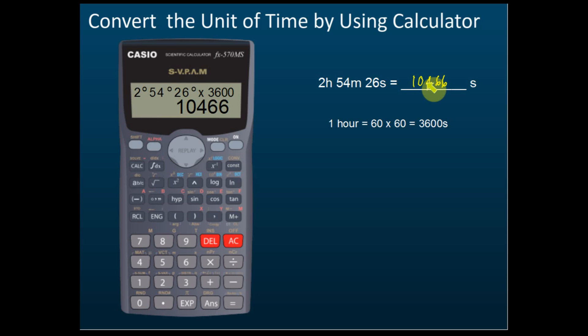After taking a reading from the stopwatch, you have your answer in minutes and seconds, but if the answer needs to be in seconds, you can use the calculator to convert — either from seconds to hours and minutes, or the reverse. That is how we use the calculator for conversions, using the degree-minute-seconds unit for angles.